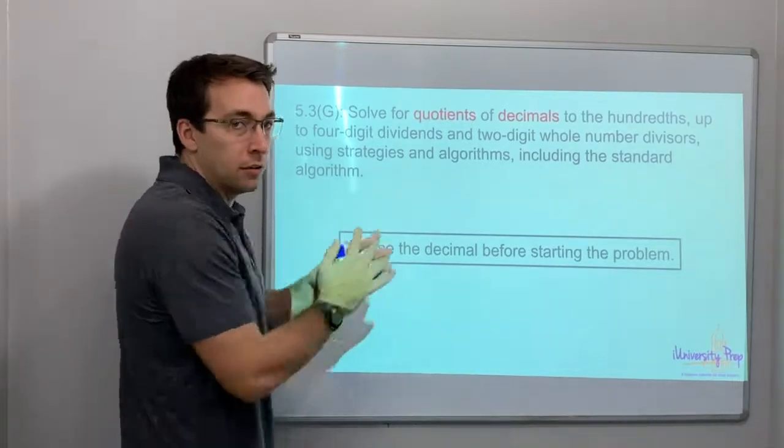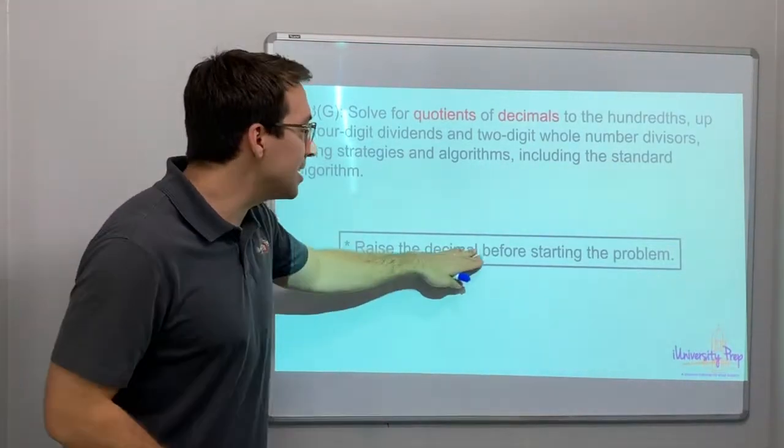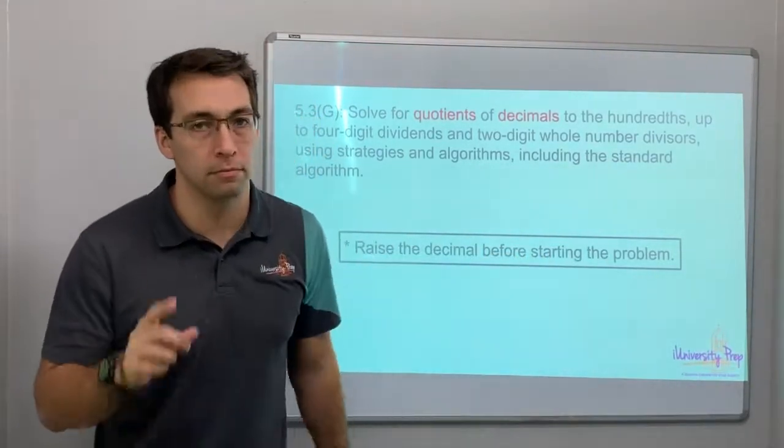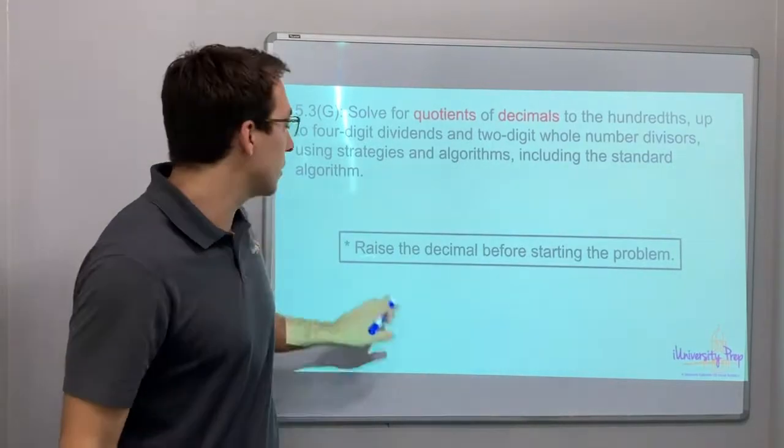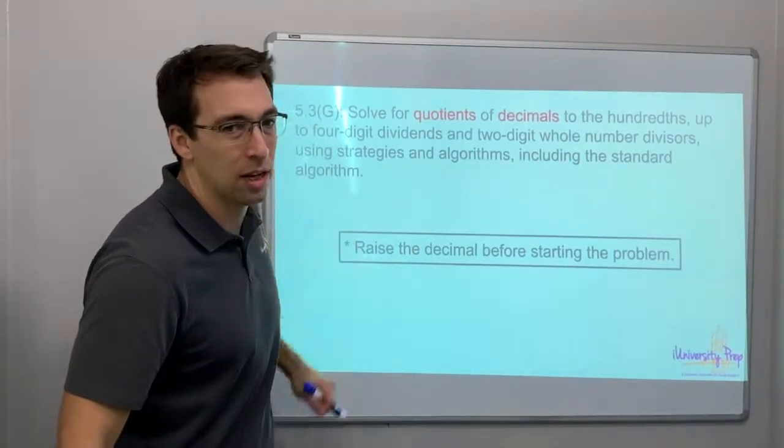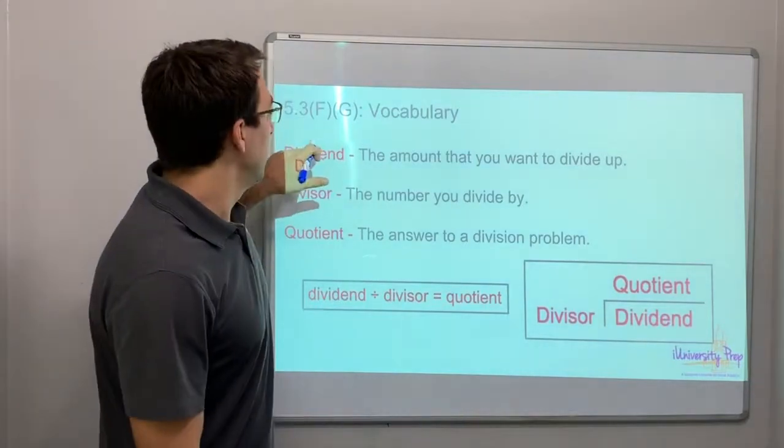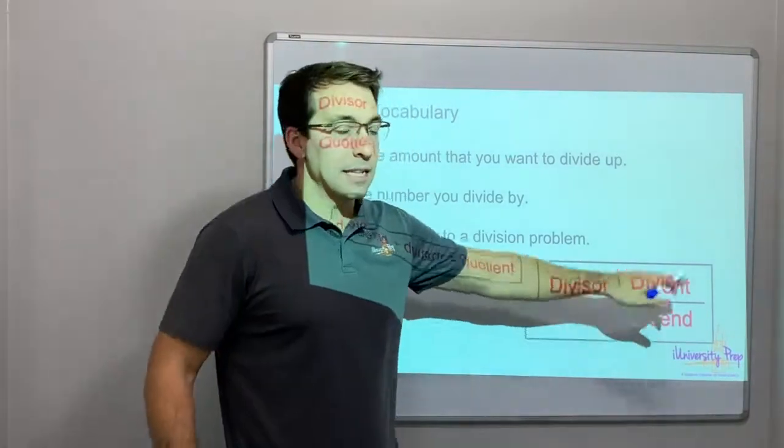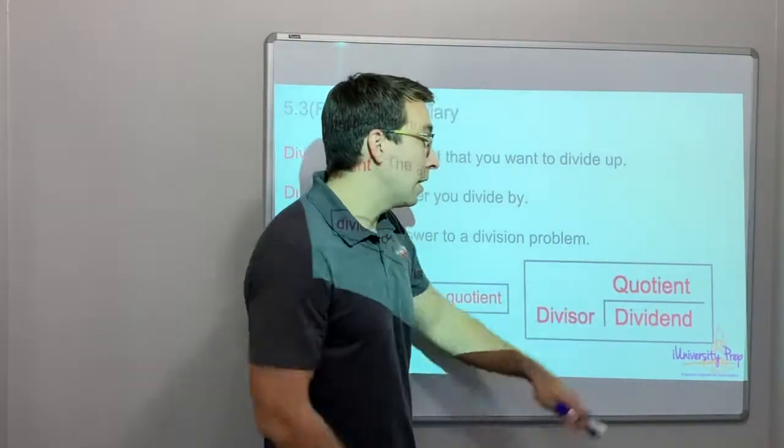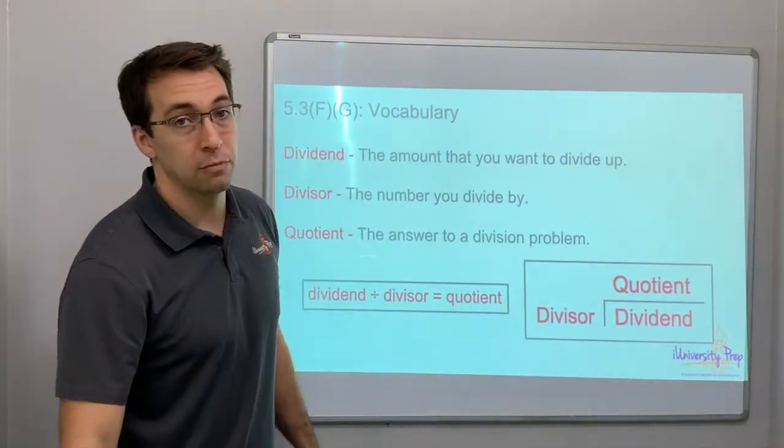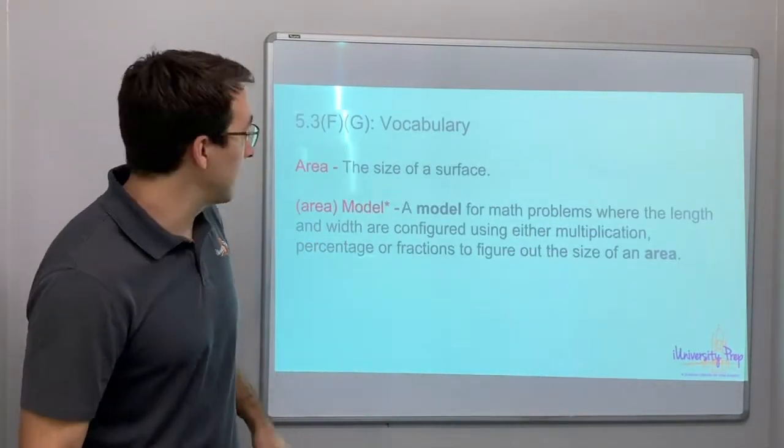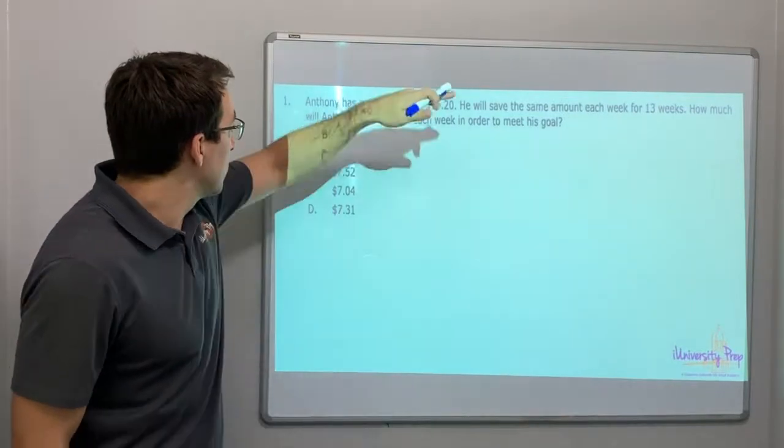Here's the whole key: if you do this you're going to be fine - raise the decimal before starting the problem. Dividend is divided by the divisor gives us the quotient. Quotient is the answer to a division problem.